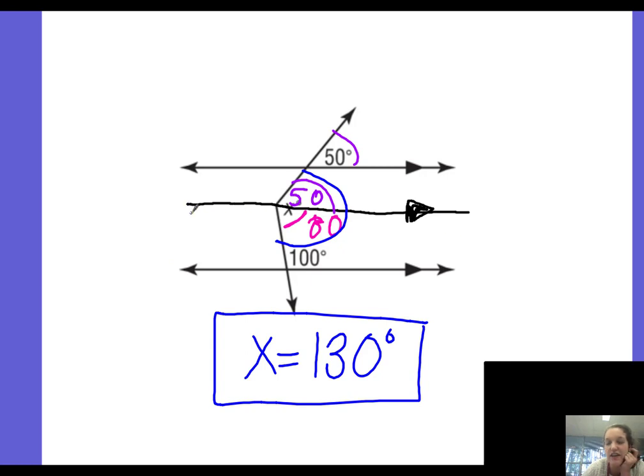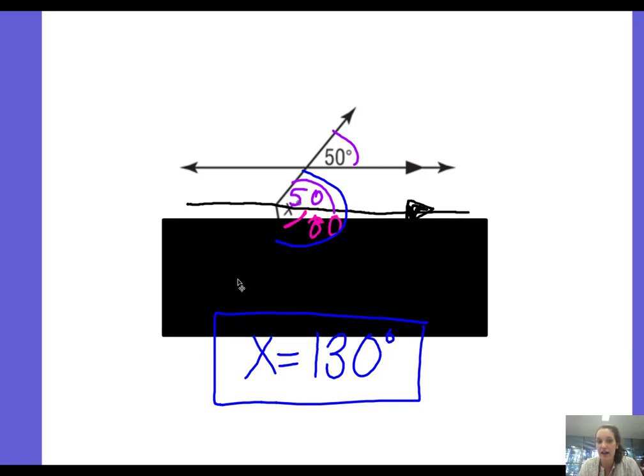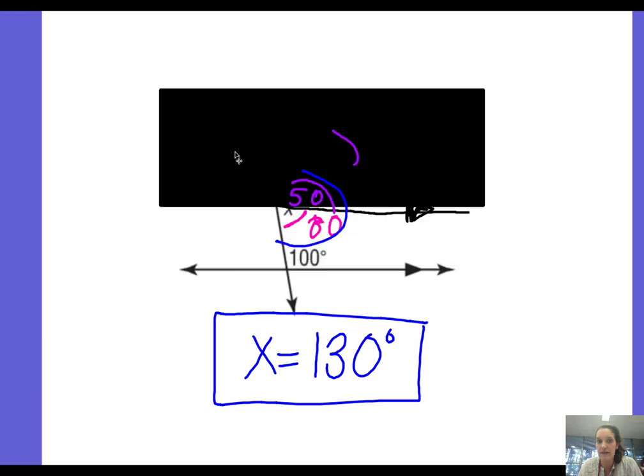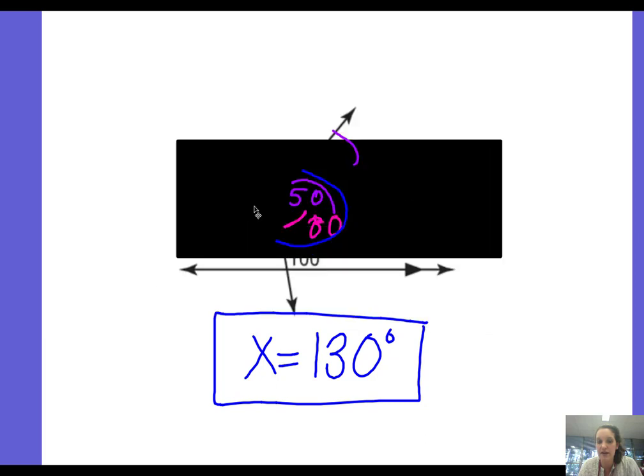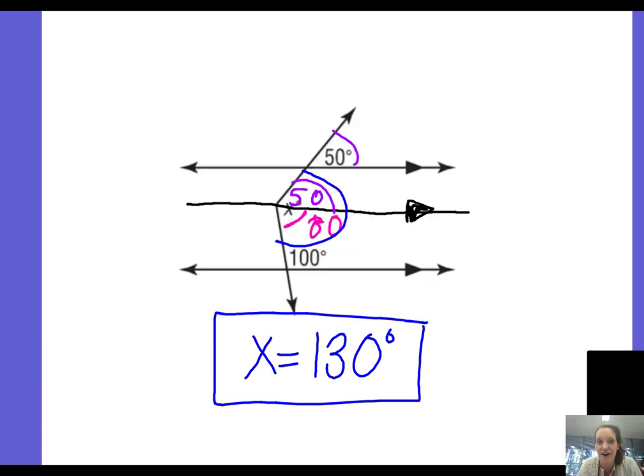So you draw a third line, it's called an auxiliary line if you ever see them say use an auxiliary line. It means draw a third parallel line so you can just look at those two at a time. So you can look at just the top part, you can look at just the bottom part, and since they're parallel those relationships apply to all of them. Then you find the top part, you find the bottom part, and then you add them together.